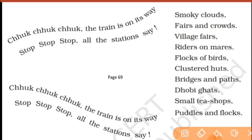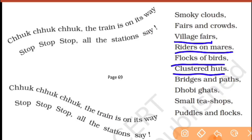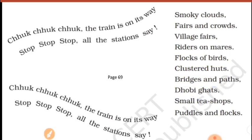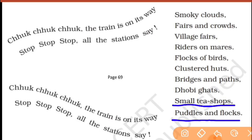Fairs and crowds — theek hai, raaste mein kahin fairs dikhte hain, crowds dikhte hain, village fairs bhi dikhte hain. Riders on mares, flocks of birds — theek hai, riders bhi dikhte hain aur flocks bhi dikhte hain, birds ke jhunde dikhte hain. Small tea shops, puddles and flocks — theek hai, chote chote tea shops bhi milte hain aur kadde mein paani kattha hua hota hai.